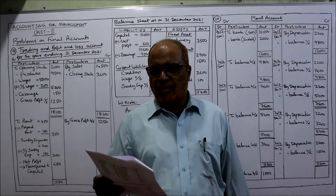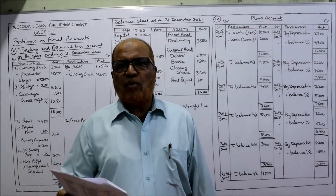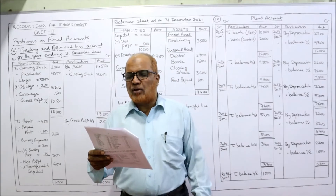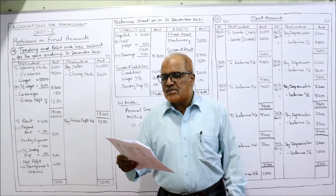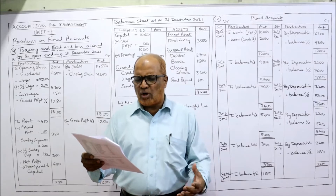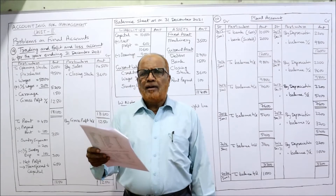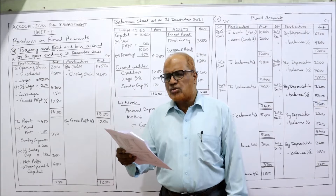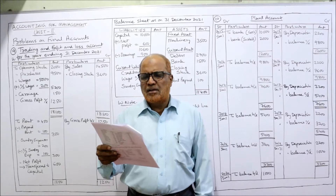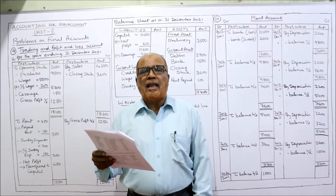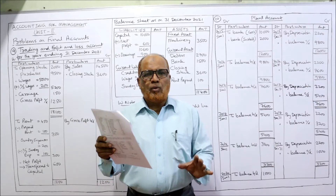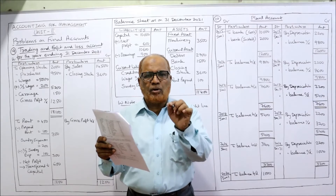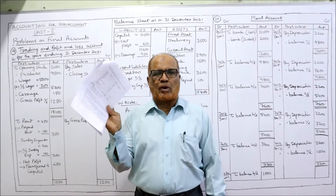See the ninth problem: from the following balances, prepare trading and profit and loss account and balance sheet as on 31st December 2021. A small problem is given. A trial balance is given — it is tallied, with a total of 25,900. Always keep a notebook, pen, and calculator beside you and write it down immediately on the worksheet.